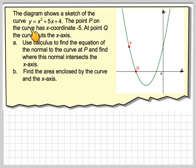The diagram shows the sketch of the curve y equals x squared plus 5x plus 4. The point P on the curve has x-coordinate minus 5. At point Q, the curve cuts the x-axis. Use calculus to find the equation of the normal to the curve at P and find where this normal intersects the x-axis.